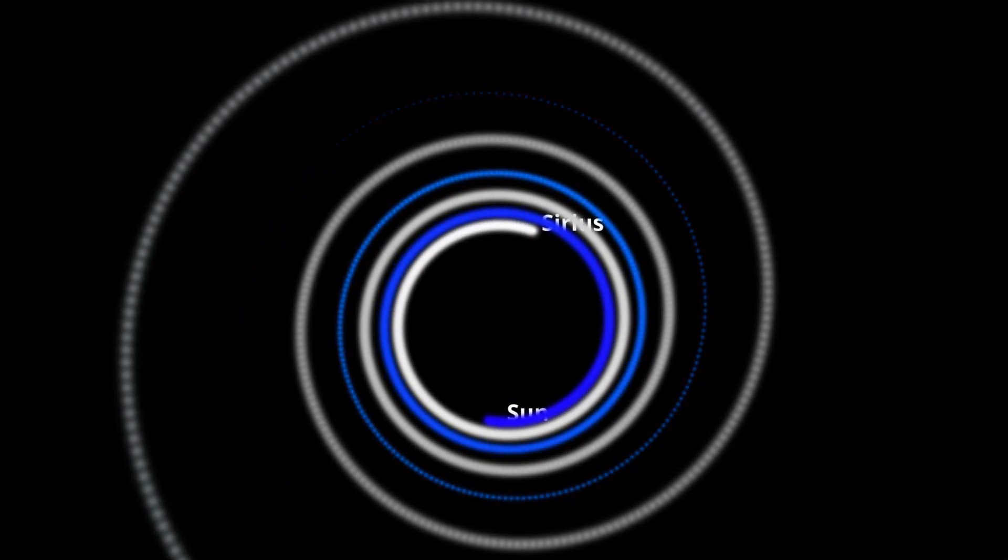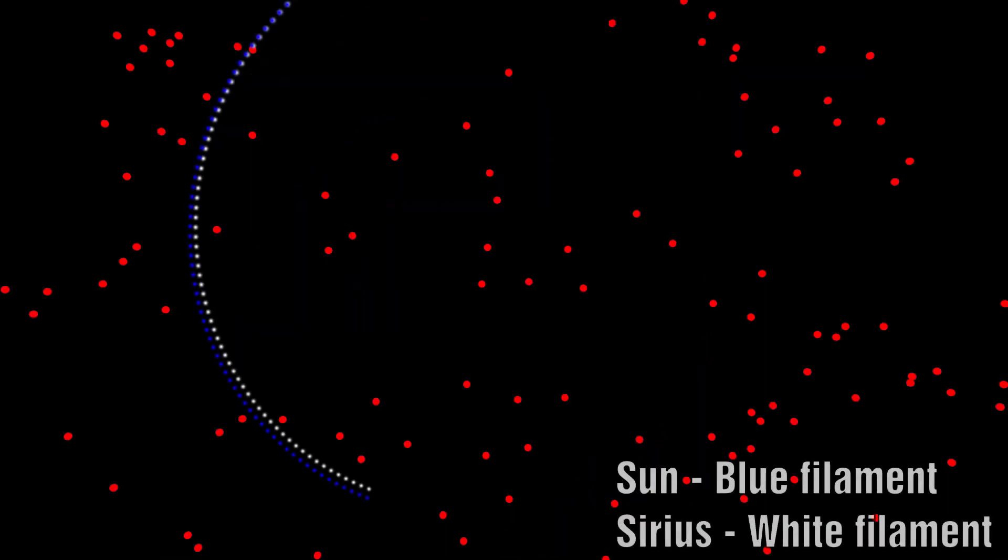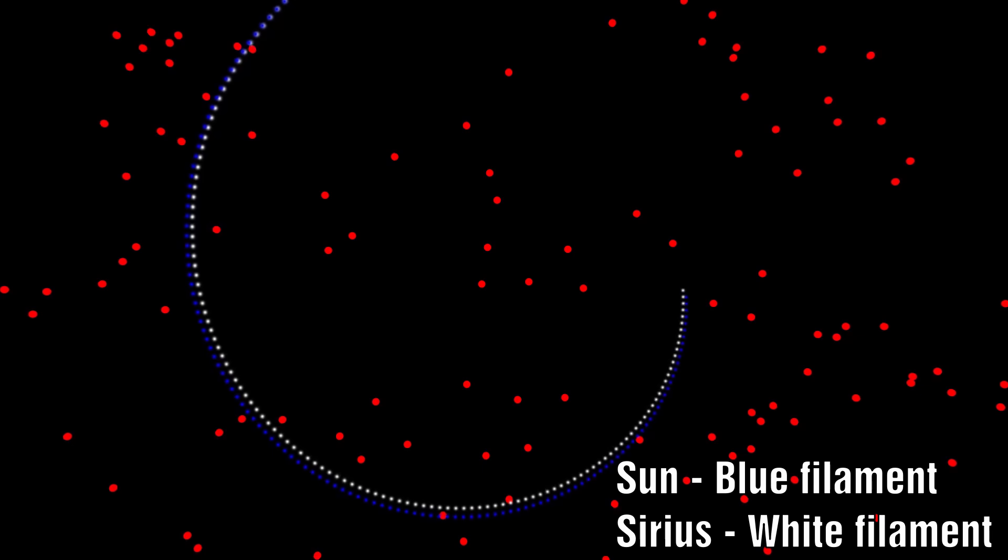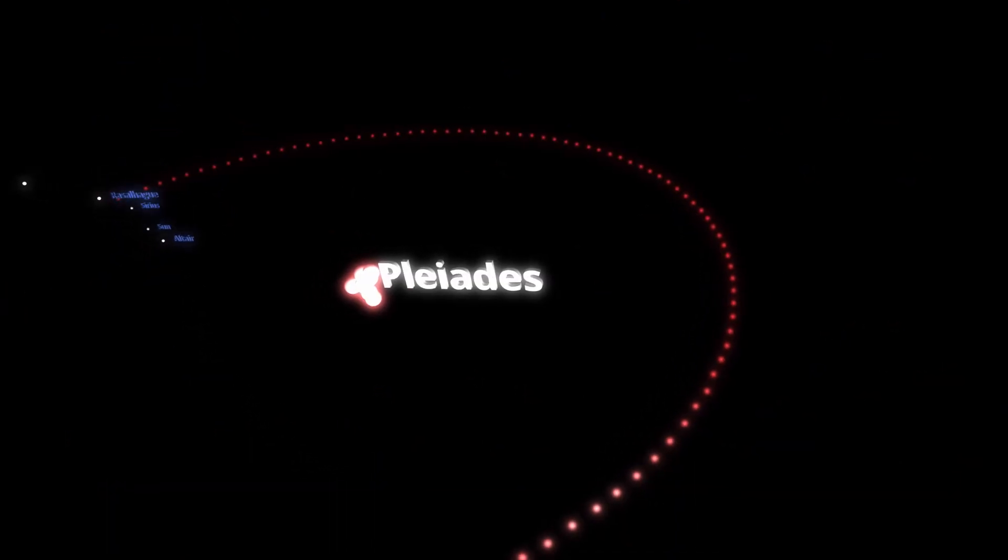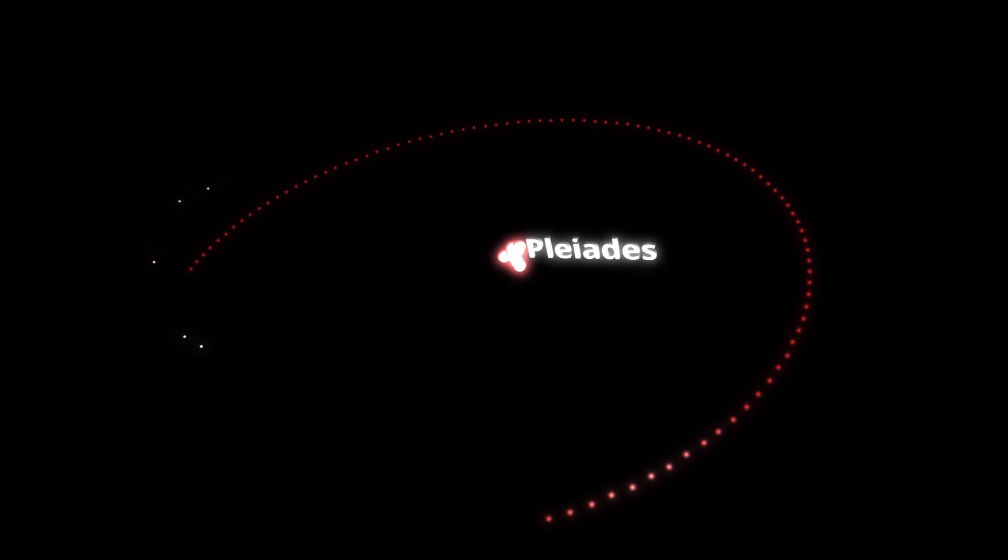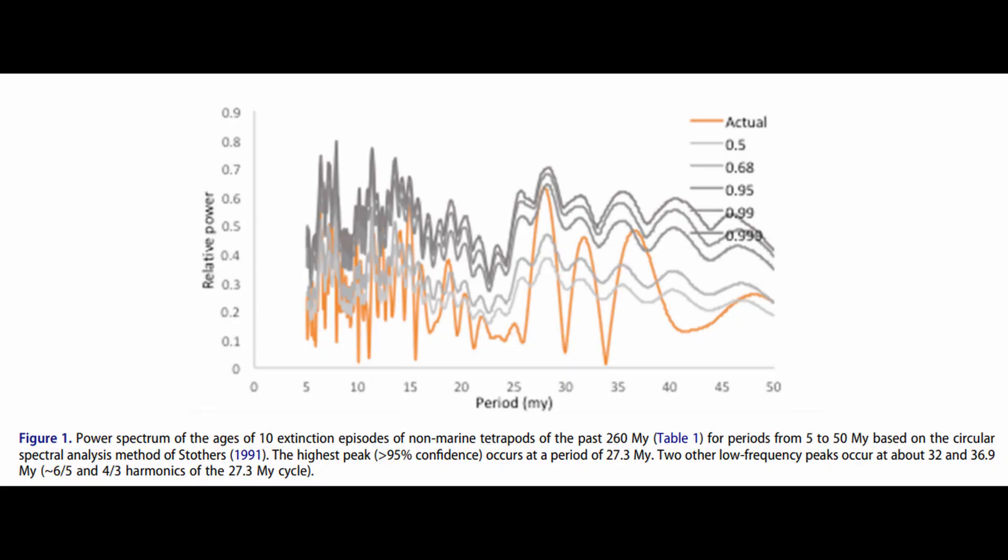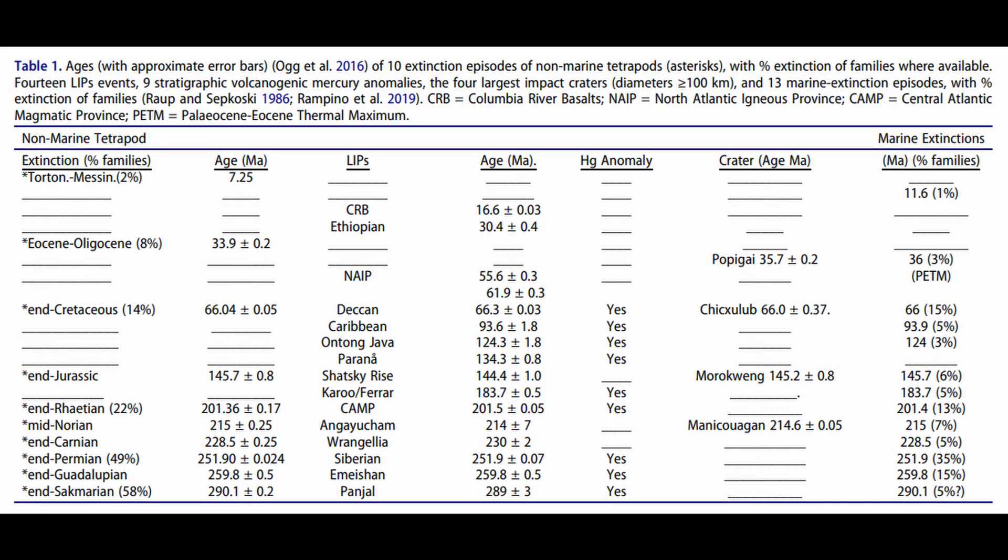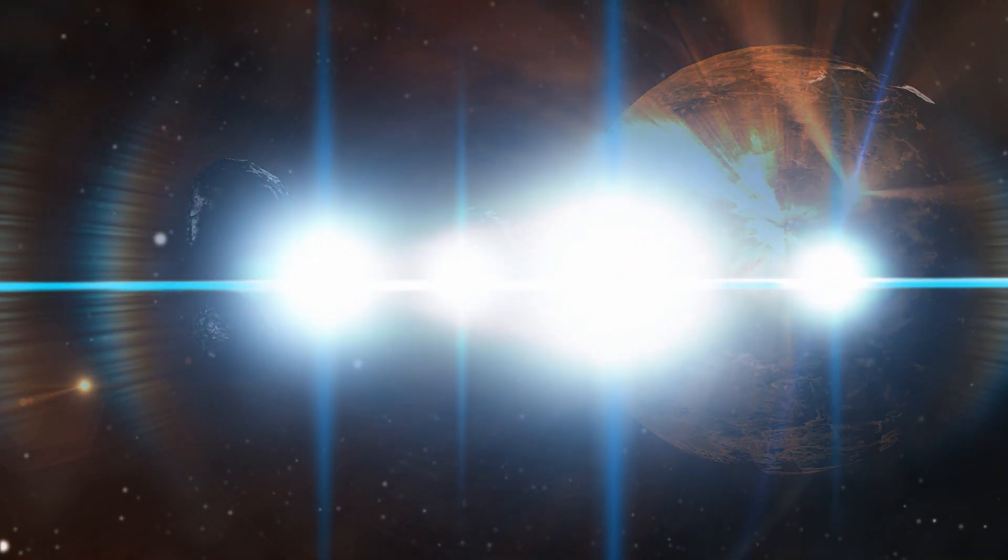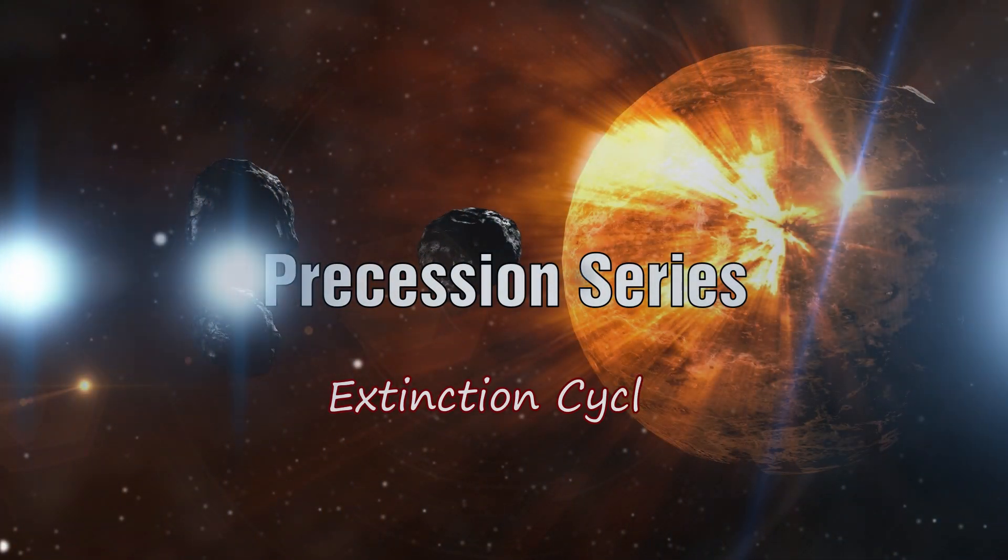We have discussed our motion along twisting Birkeland currents both on this channel and on the Thunderbolts. We speculated that the idea of the Nemesis star and its 26 million year extinction cycle may be linked to our motion around the Pleiades. In a new study just published, scientists have examined the frequency of extinction events in land animals and found that it coincides with reported mass extinctions of ocean life and points to a cycle of between 26 and 27 million years. Let's examine why this might be a very important finding.